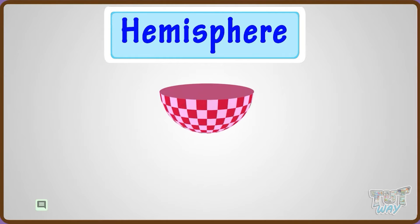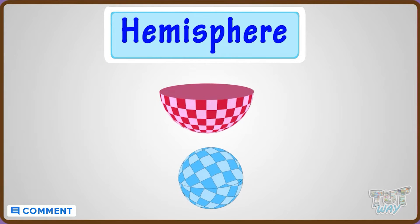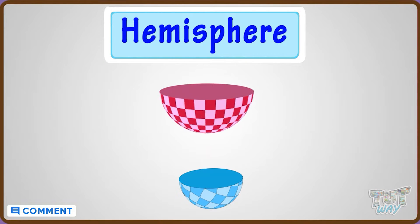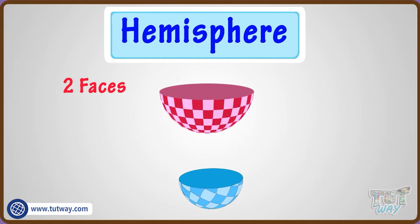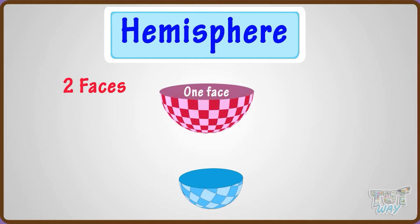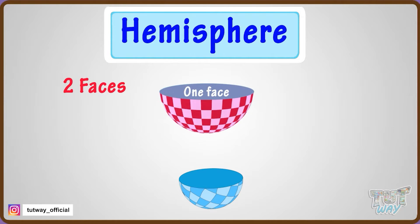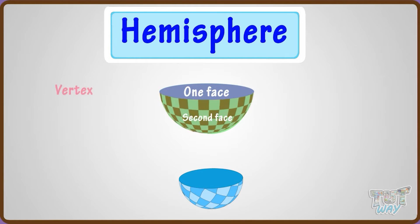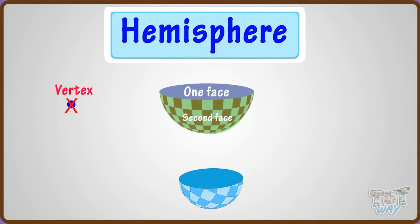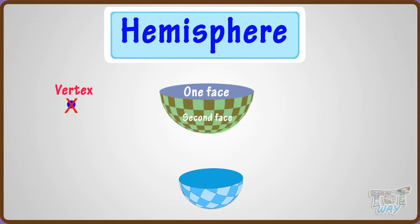Hemisphere refers to half of a sphere. It has two faces: one is a flat surface, which is completely round, and the other one is a curved surface. It has no vertex, and it has one round edge.